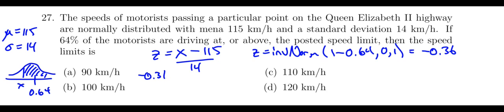So negative 0.36 is going to equal x minus 115 over 14. Now I'm going to multiply that up by 14, so it's going to be negative 0.36 times 14, and then I'm going to add that 115 from the right-hand side to the left-hand side.